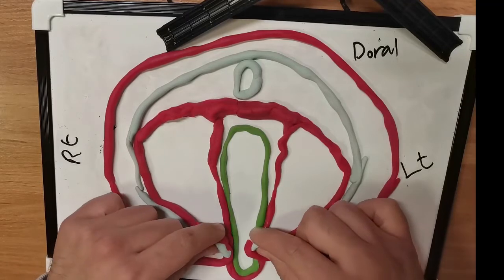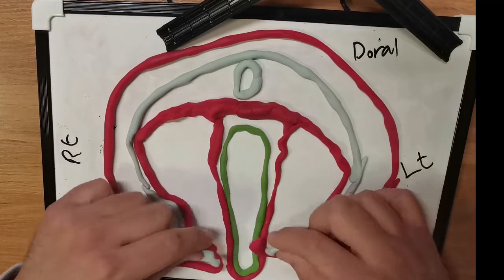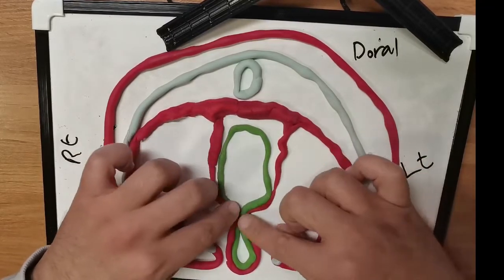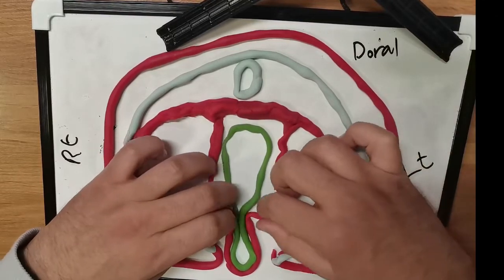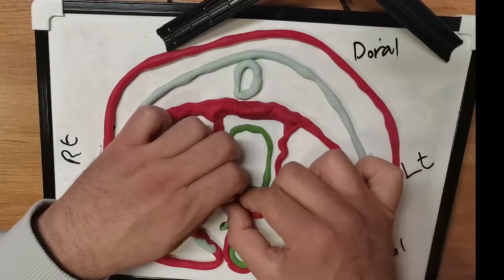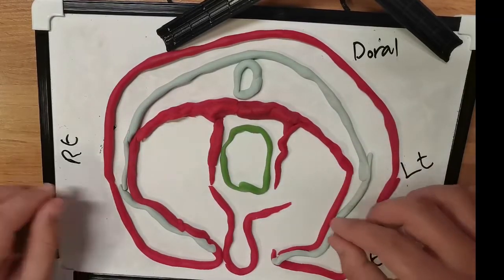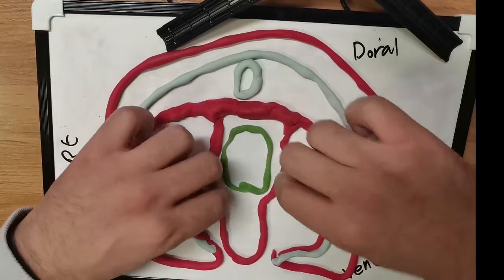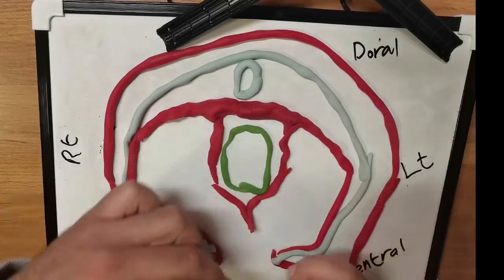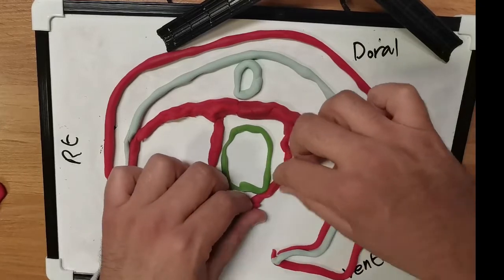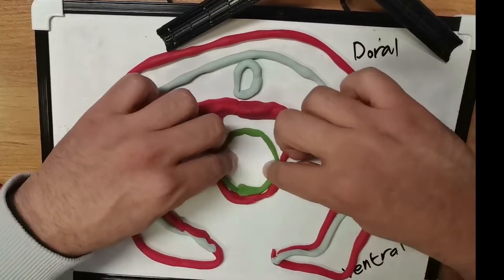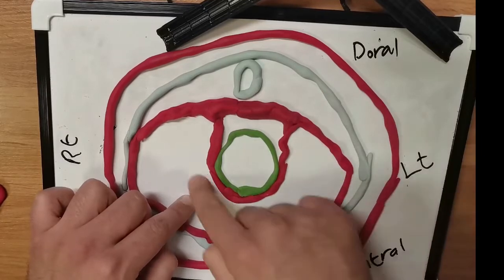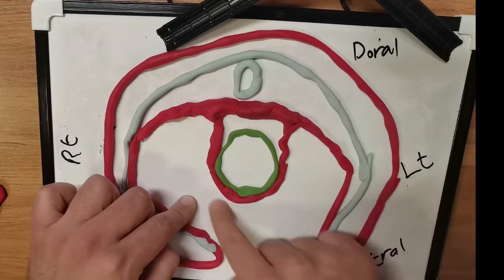Now the right and left sides are going to approach each other until they make contact. Starting with the endoderm: when it finishes folding it will end up as a tube — our gut tube. The same happens with the visceral layer of mesoderm; the right and left sides approach each other, make contact, and continue surrounding the gut tube. This gut tube with its surrounding visceral mesoderm will become our future visceral peritoneum.